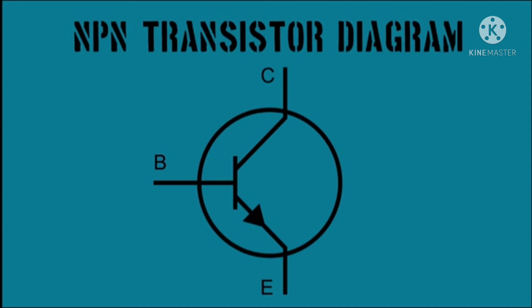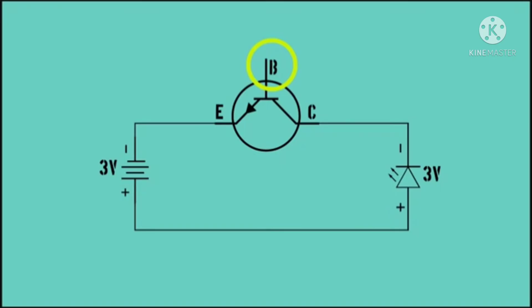The NPN transistor has three pins. In this diagram, you can see that the device has a base pin, a collector pin, and an emitter pin. The transistor is wired into a circuit with a power supply and an LED. What you can see is that the LED is not lit because there is no current flowing through the transistor. This is because the transistor defaults to a non-conducting state.